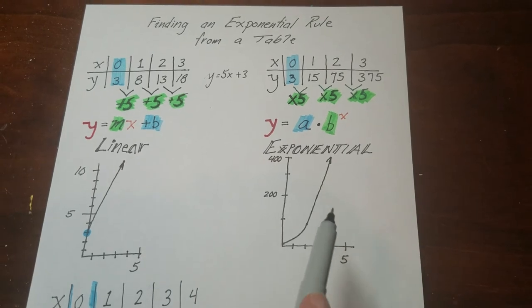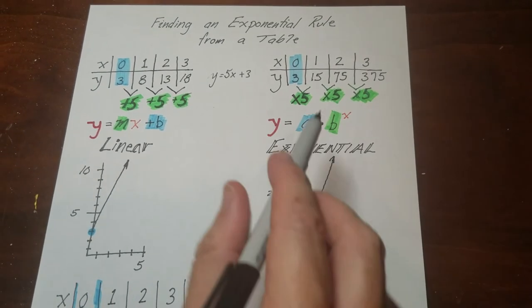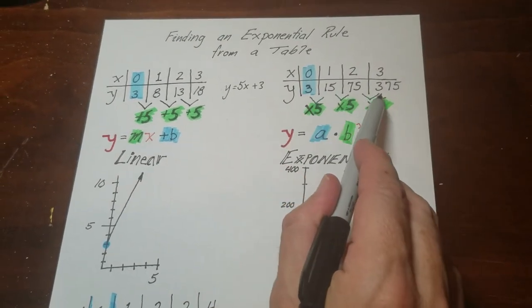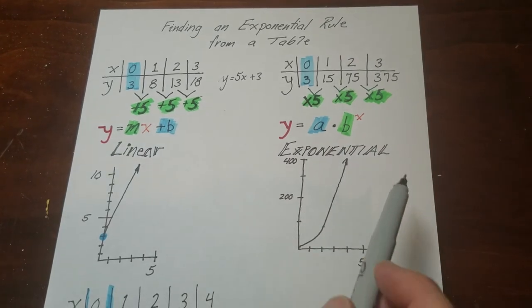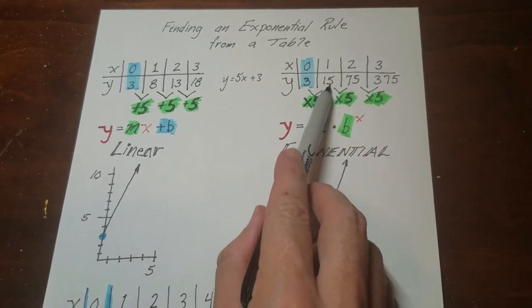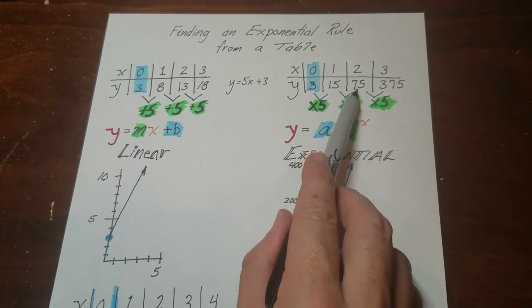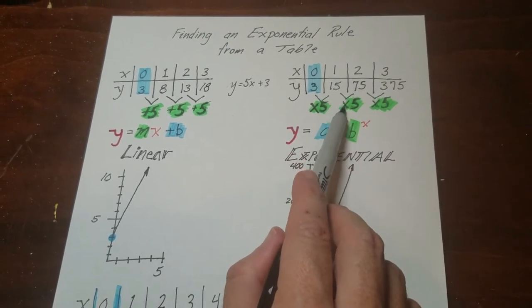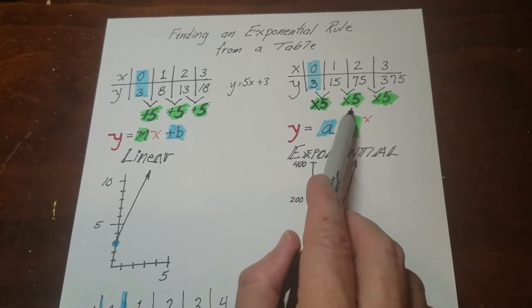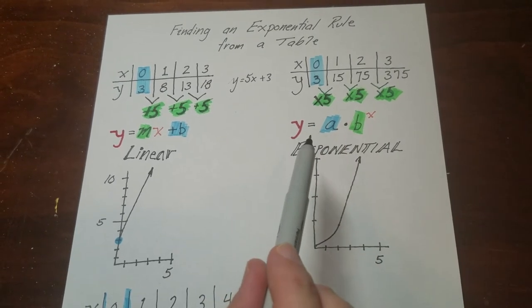Now if you want to figure out what it's multiplying by, and it doesn't matter if these numbers are going up or they're going down, you divide it. 15 divided by 3 is 5. 75 divided by 15 is 5. So this is actually repeated multiplication, repeated times 5.